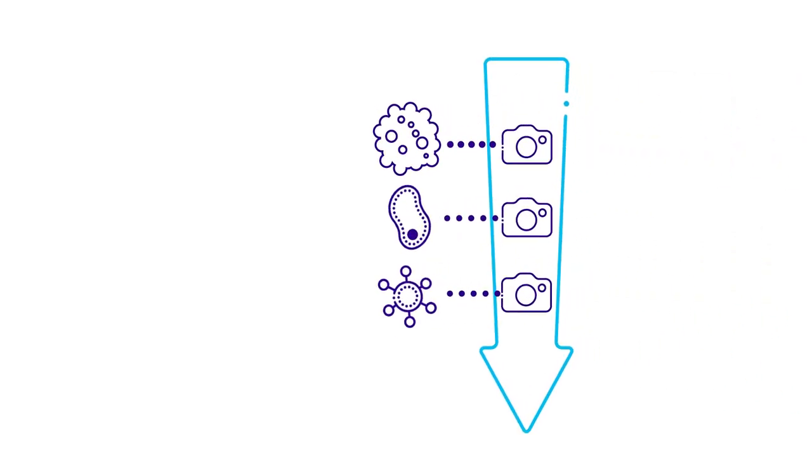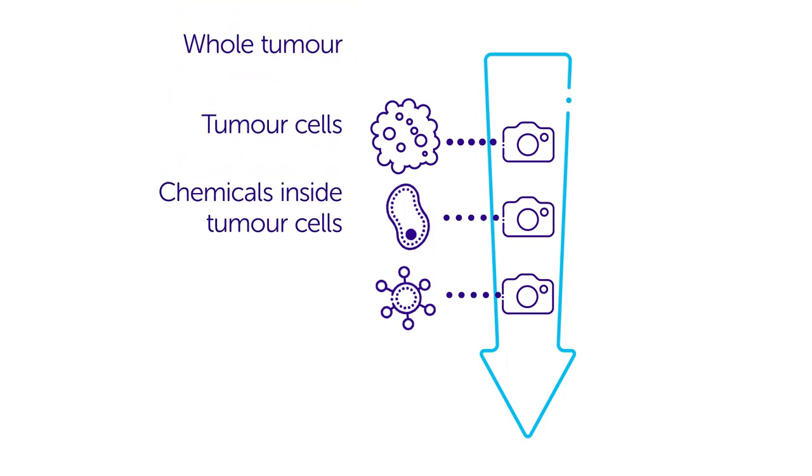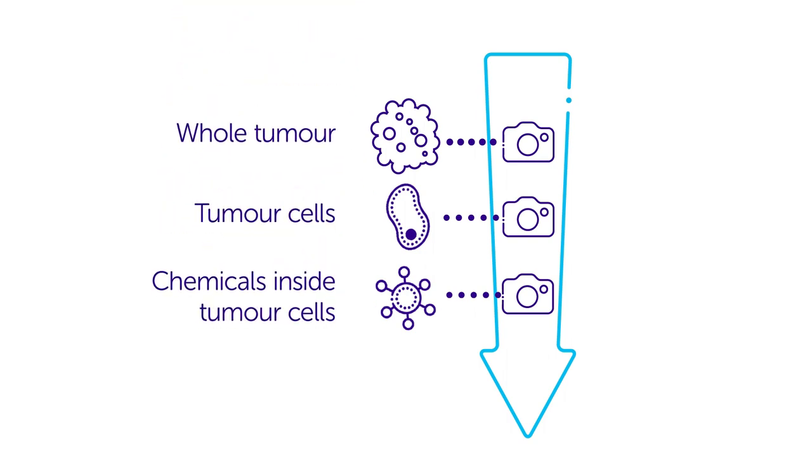The maps are made in three stages. At each stage the scientists zoom in closer and closer to the cancer cells.